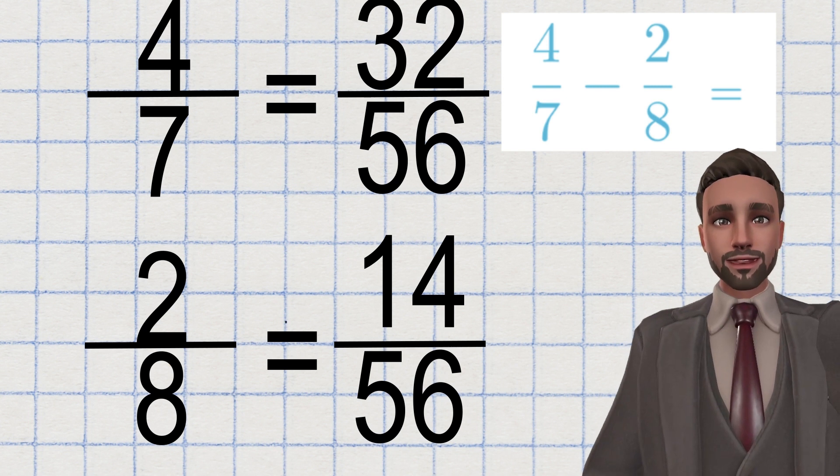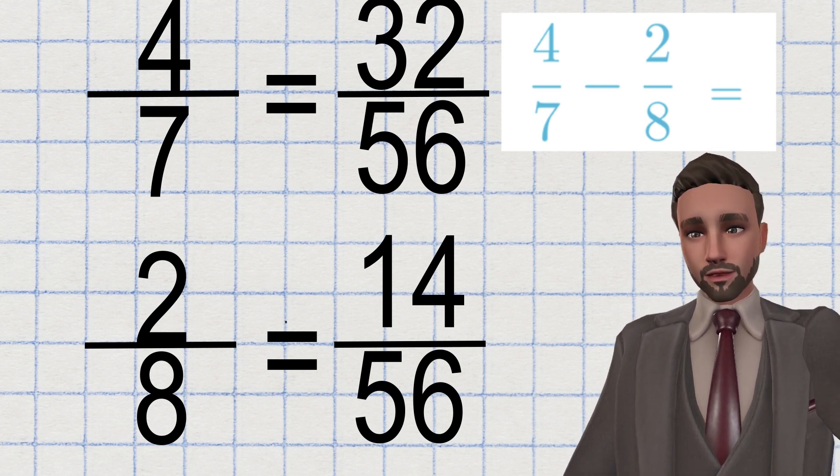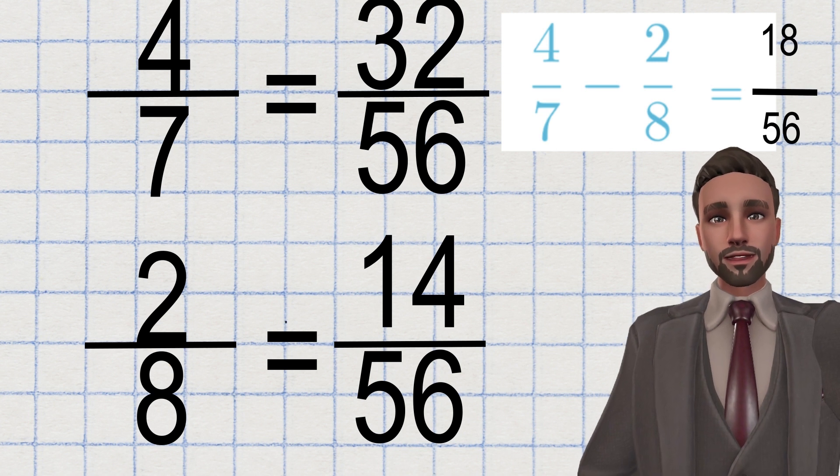Now I can answer the question four sevenths subtract two eighths using my equivalent fractions. 32 over 56 subtract 14 over 56 gives me 18 over 56. So four sevenths subtract two eighths is 18 over 56.